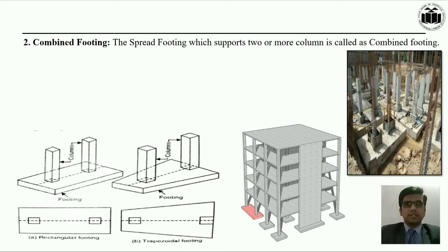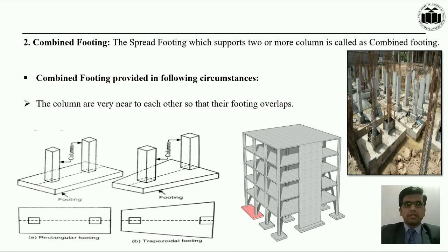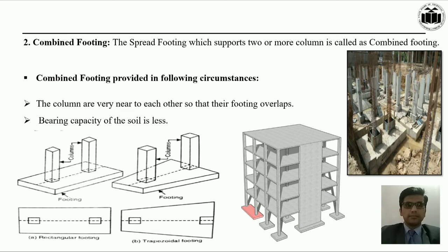The next type of foundation is combined footing. The spread footing which supports two or more columns is called as combined footing. Such kind of combined footings are generally provided in the following circumstances: when the columns are very near to each other so that their footing overlaps, or when the bearing capacity of soil is less. In this image, we can see a rectangular and a trapezoidal combined footing. Rectangular combined footing is generally provided when load on two columns are equal, whereas trapezoidal combined footing is provided when load on both the columns are unequal.